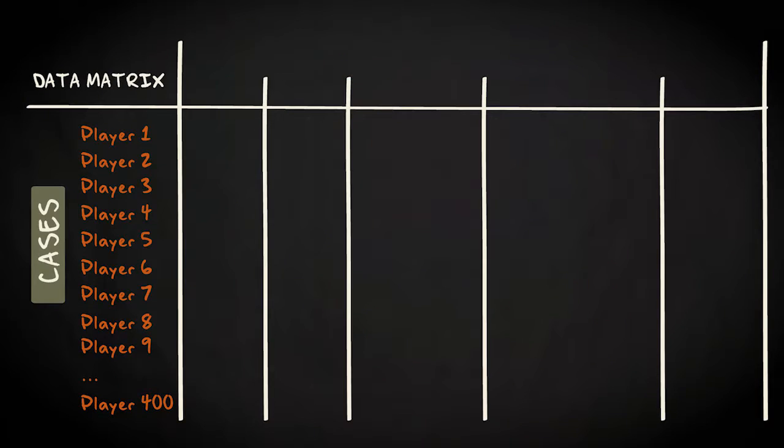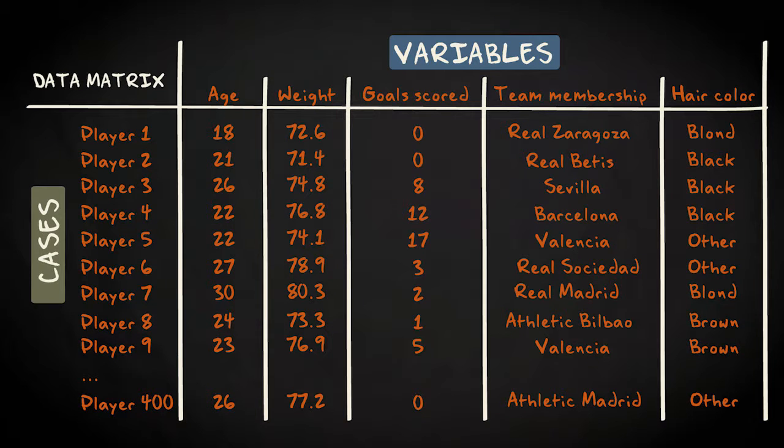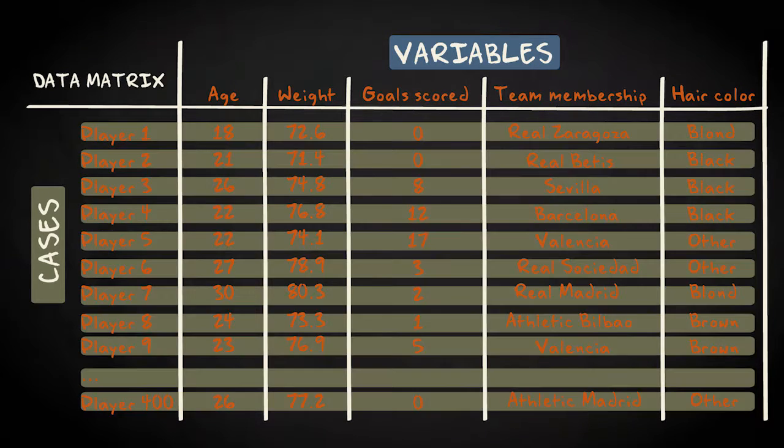The best way to order all this information is by means of a data matrix. This is such a data matrix. The data matrix is the core element of every statistical study. It is nothing more than an overview of all your cases and variables. The cases are displayed in the rows, they range from player 1 to player 400.